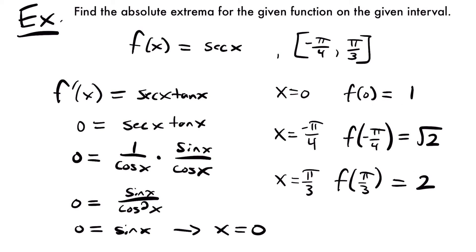If you're curious where those values came from, secant equals one over cosine. So cosine of zero is 1, and its reciprocal is 1. Cosine of negative pi over 4 is root 2 over 2, and its reciprocal is root 2. And cosine of pi over 3 is one half, and its reciprocal is 2.